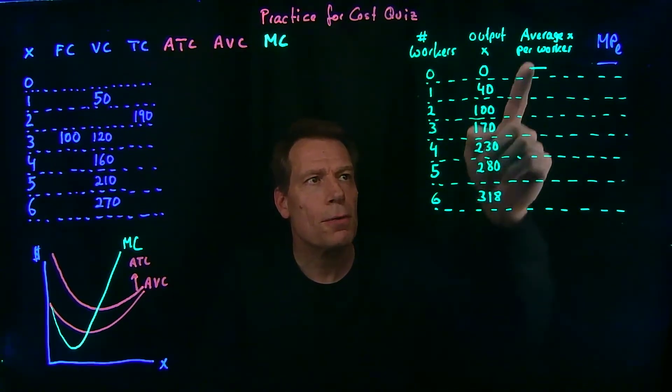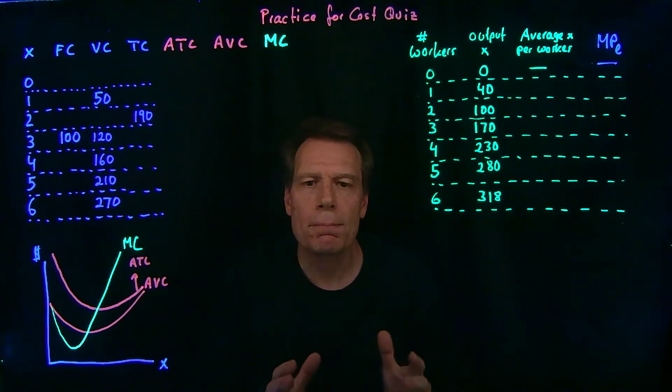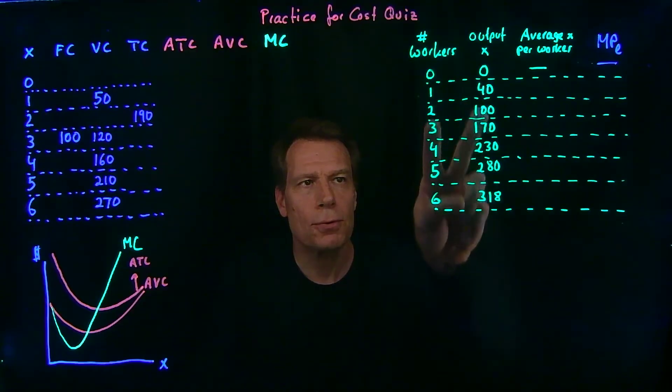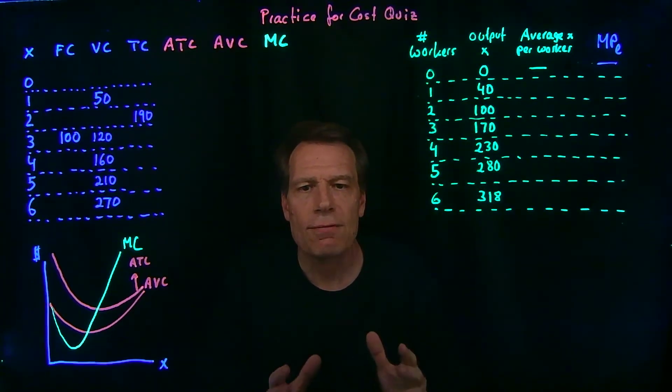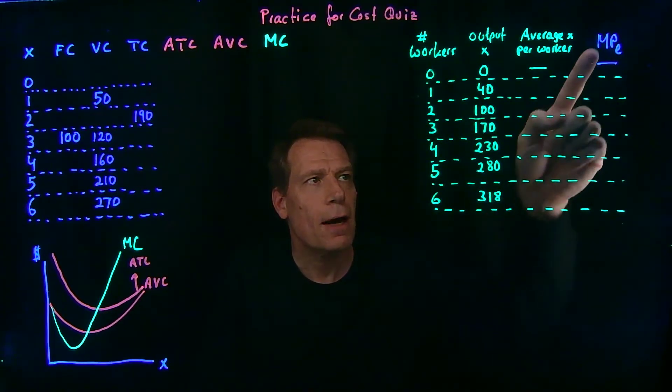Then I'd like you to fill in the third column, the average output per worker, which should be pretty easy to do given the first two columns. And finally, I'd like you to fill in a fourth column,